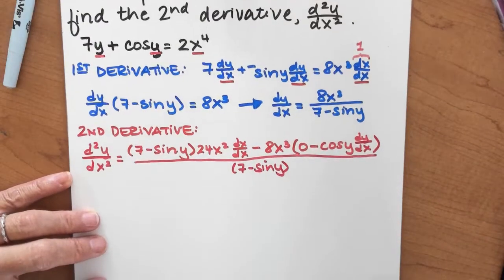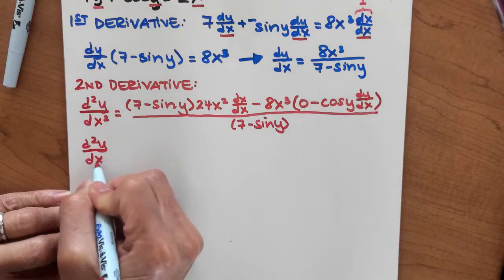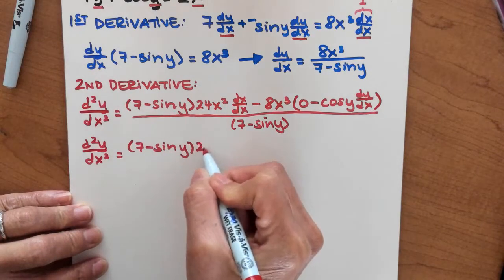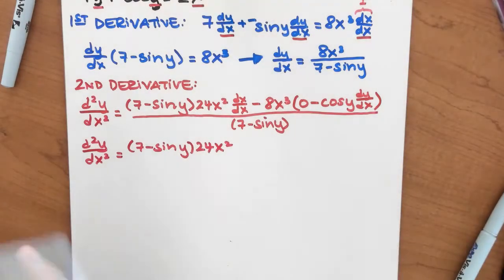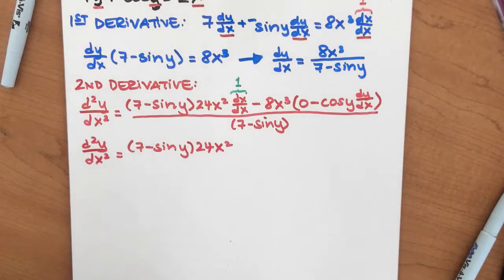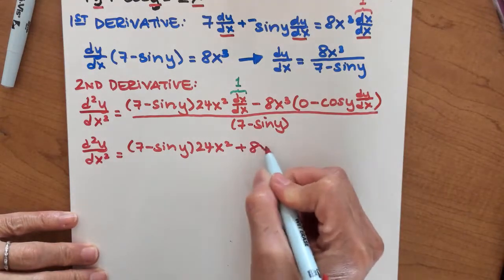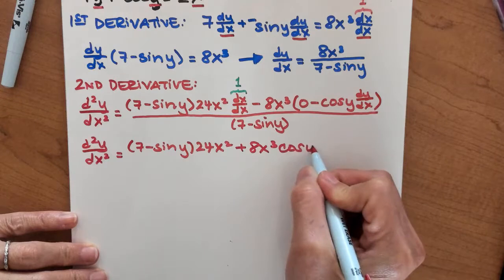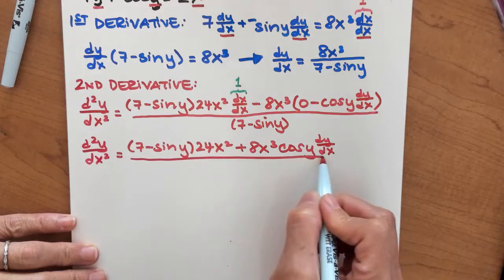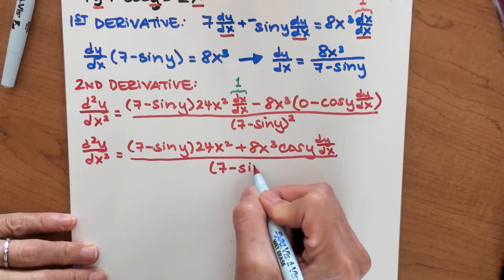So I'm just going to clean this up a little bit. The second derivative equals 7 minus sine y times 24x squared — and again, dx/dx equals 1 — over here I'm going to get plus 8x cubed cosine y times dy/dx, all over the denominator squared. I forgot the squared on the previous step, so I'll add that back in.